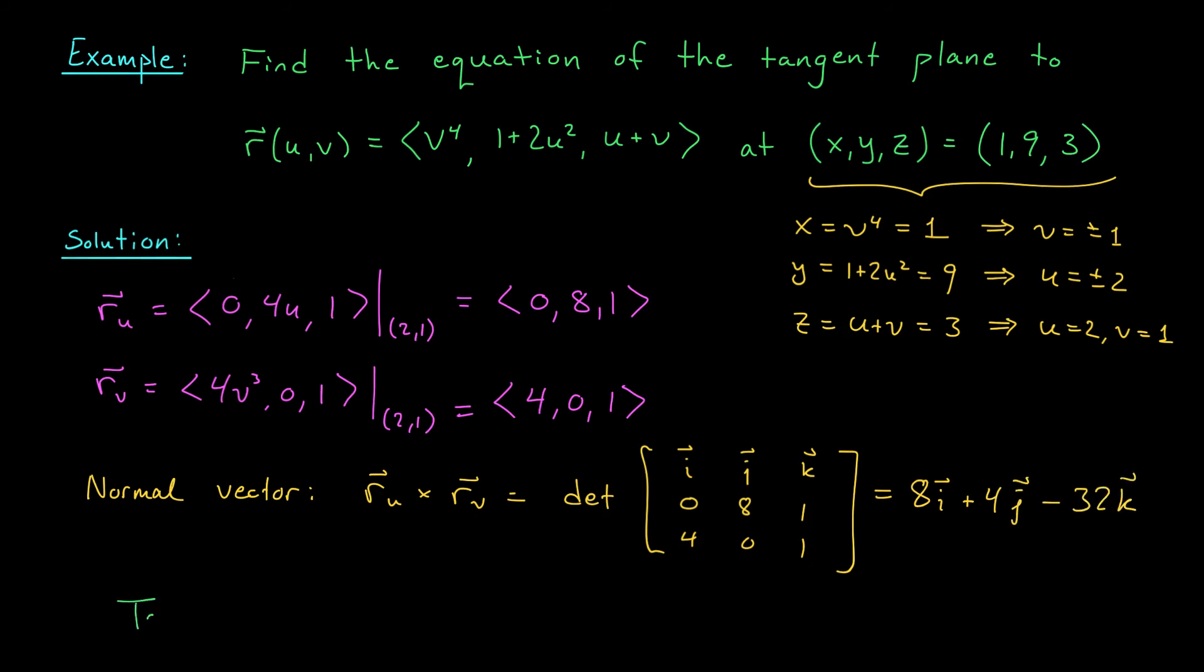And therefore, the equation of the tangent plane at the point xyz equals 1, 9, 3 is 8 times x minus 1 plus 4 times y minus 9 minus 32 times z minus 3 equals 0.